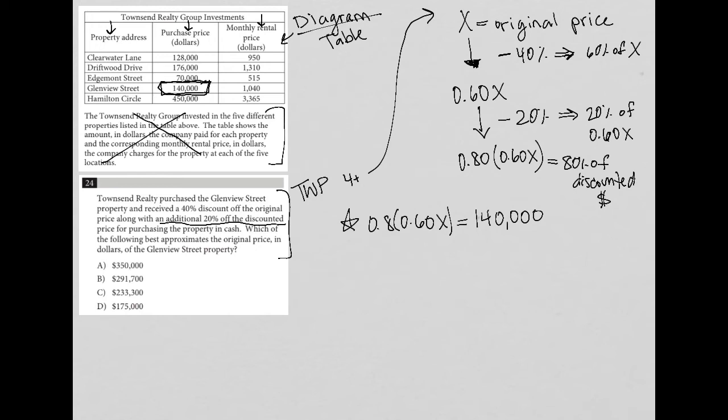So in my calculator, 0.8 times 0.6 is 0.48x equals $140,000. Divide both sides by 0.48 and I get x equals $291,006.